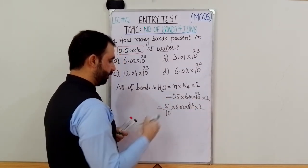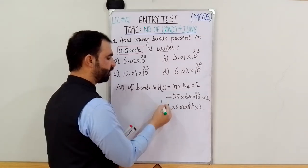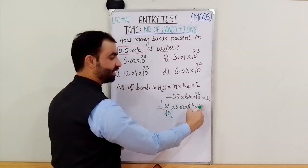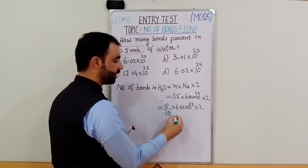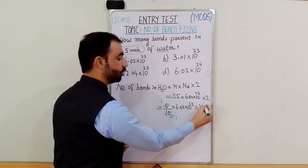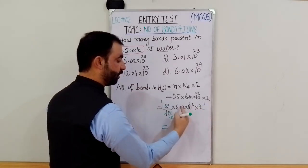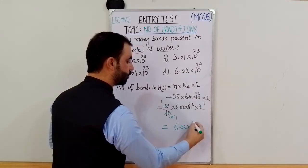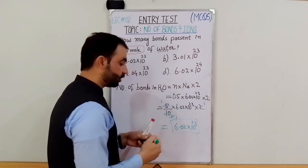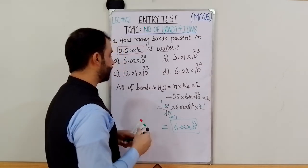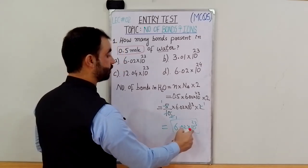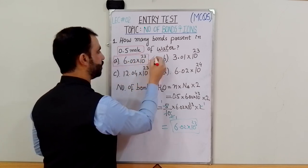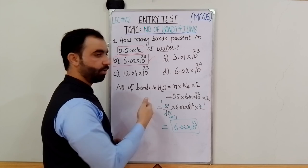After canceling: 0.5 × 2 = 1. So the answer is 6.02×10²³. The first option A is the correct answer for MCQ 1.